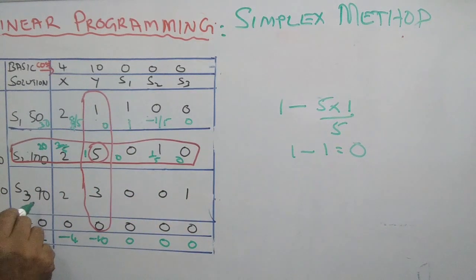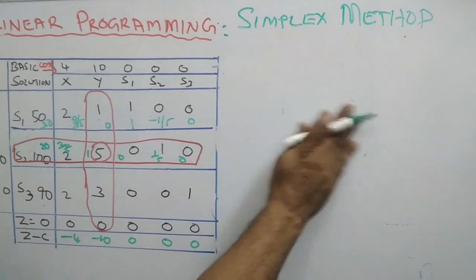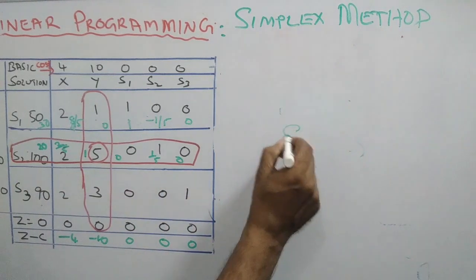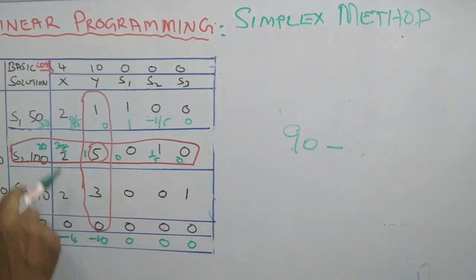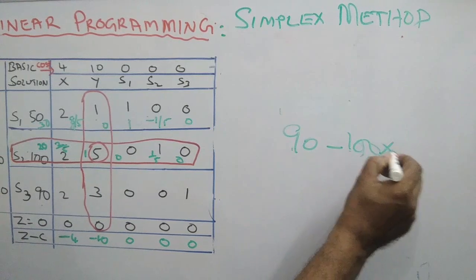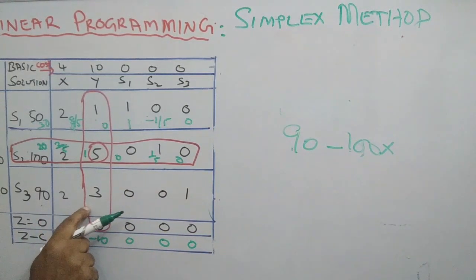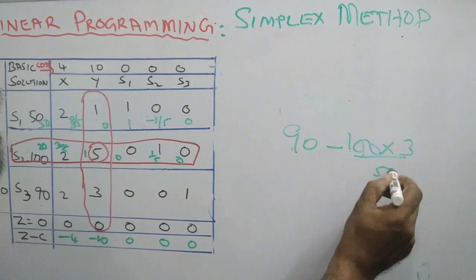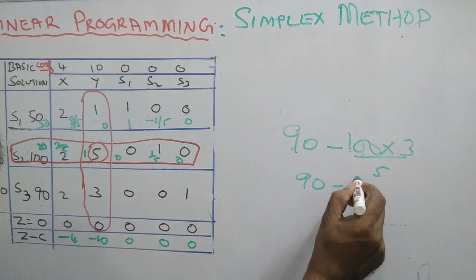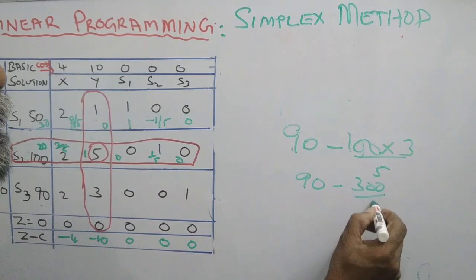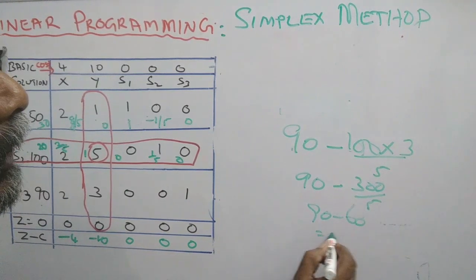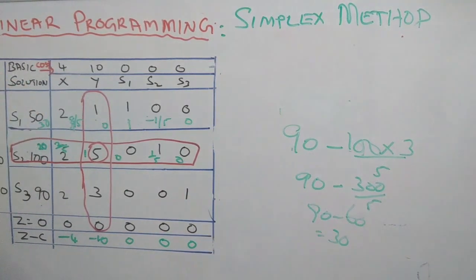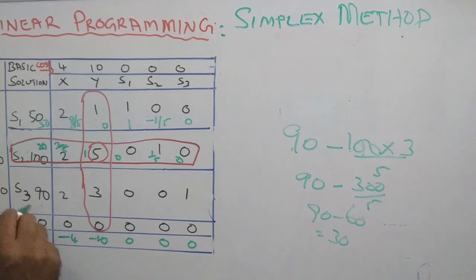In the same fashion, we calculate the number for 90: 90 minus the corresponding number in the pivot row 100, into the corresponding number in the pivot column 3, by 5 — that is 90 minus 300 by 5, which is 90 minus 60, equal to 30. It is so simple — numerical computation gives 30.